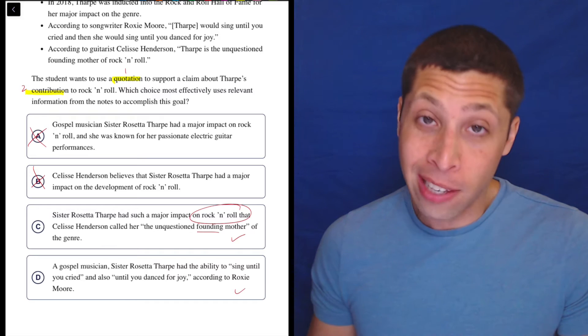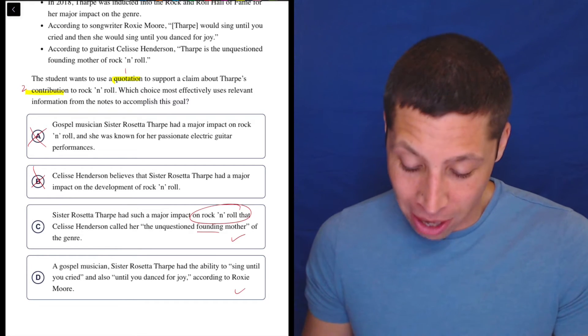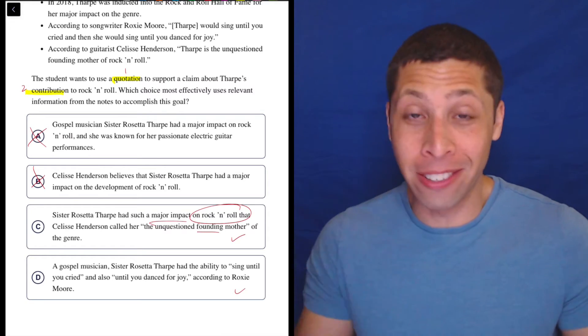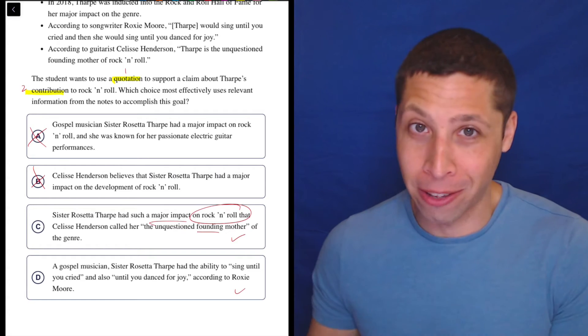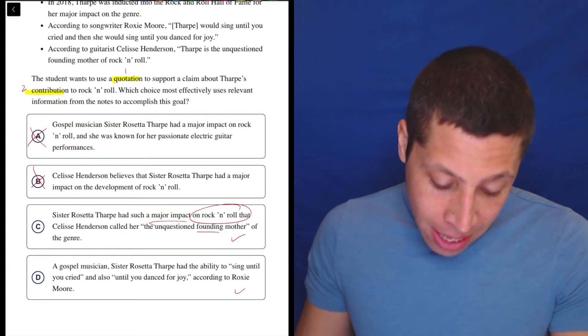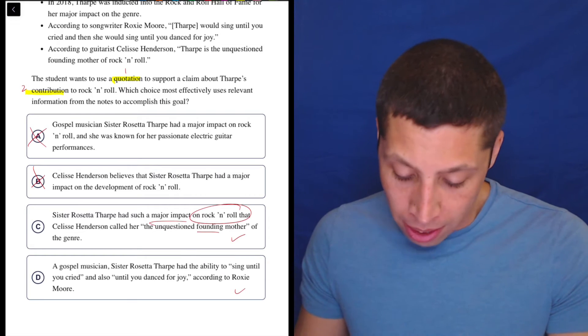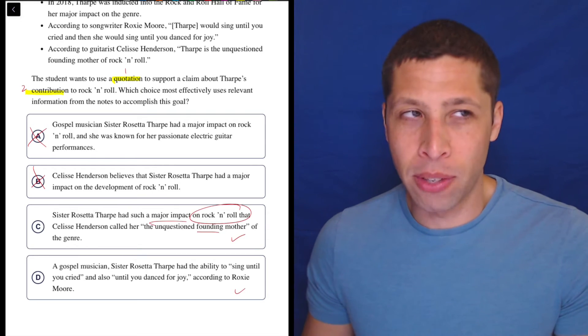Well, Choice C actually mentions rock and roll and talks about a major impact on rock and roll. That sounds like a dead-on synonym for 'contribution to rock and roll.' Now D says she's a gospel musician, so that's not the same genre, but also 'sing until you cry and until you dance for joy' could apply to any kind of music. So it's not specific to rock and roll here.